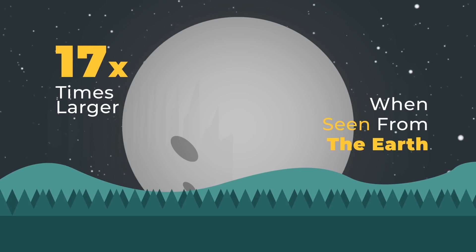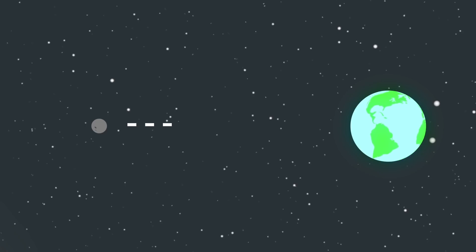The distance between the earth and the moon right now is 384,400 kilometers.